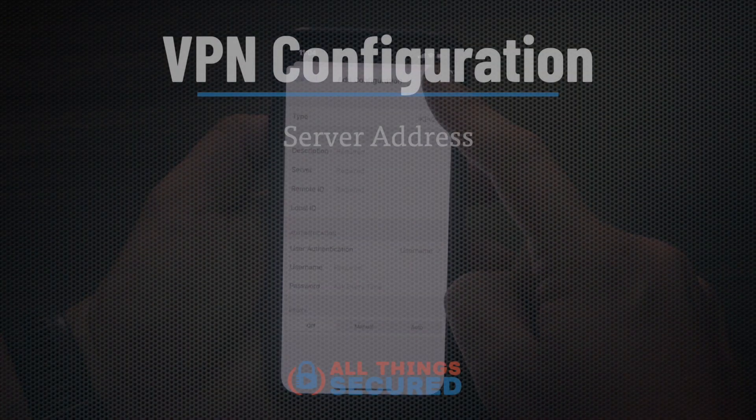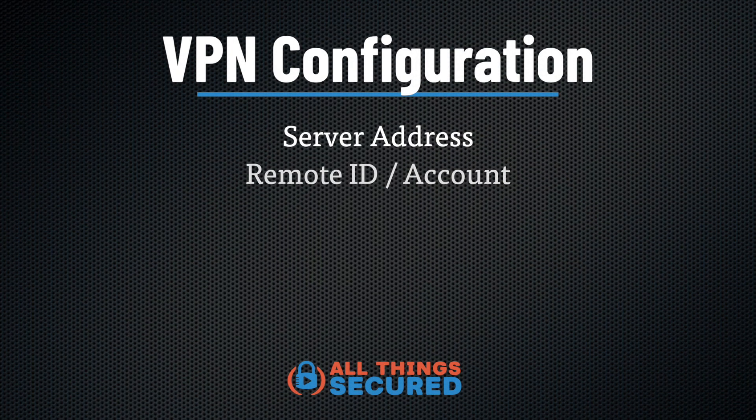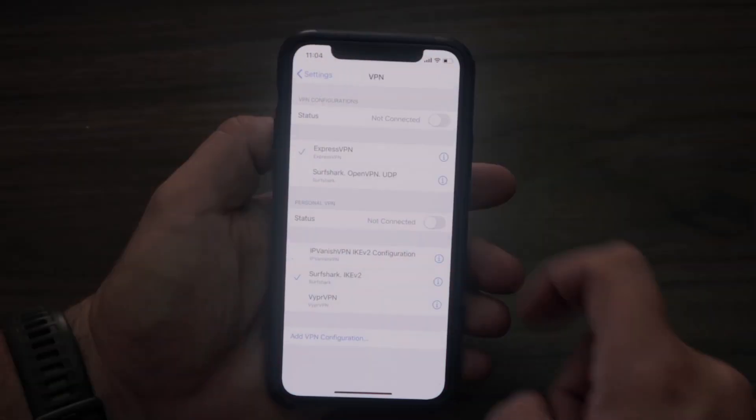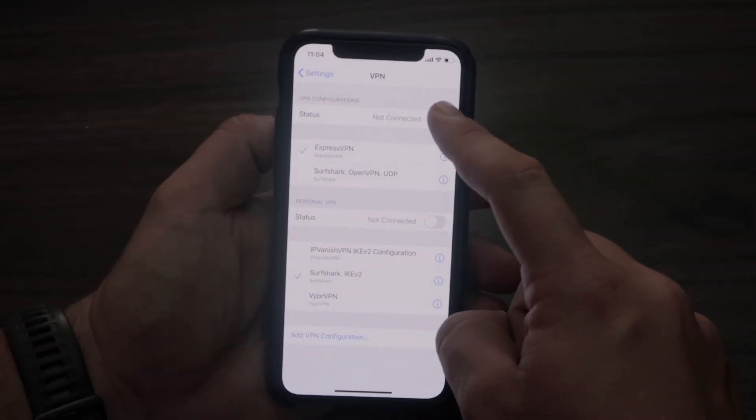That includes the server, the remote ID, and your username and password. All of this has to be filled in. Once you have it, click Done, and it's going to show up as a VPN configuration in the VPN tab.